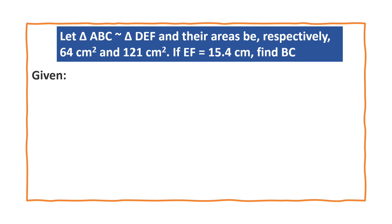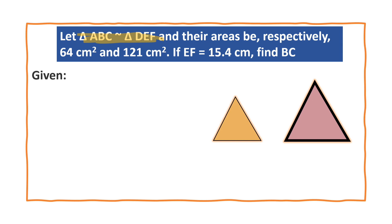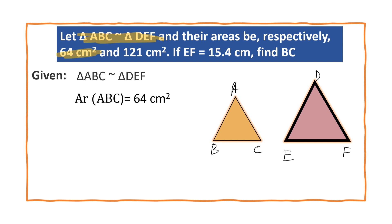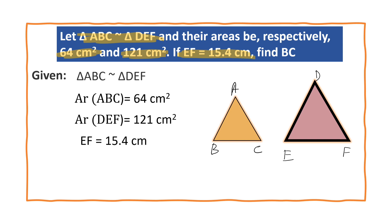Here we are given two triangles that are similar to each other — triangle ABC and triangle DEF. This is triangle ABC, this is triangle DEF. We are given that the area of triangle ABC is 64 cm², the area of triangle DEF is 121 cm², and the side EF is equal to 15.4 cm. We have to find BC.